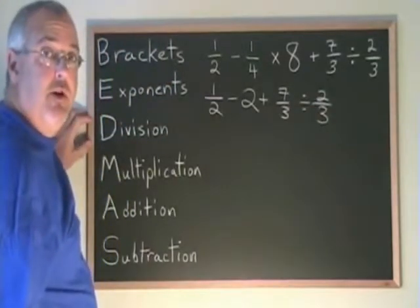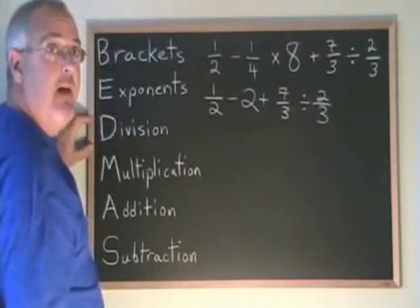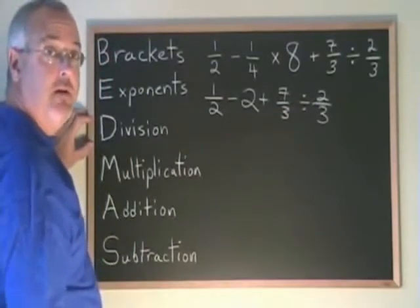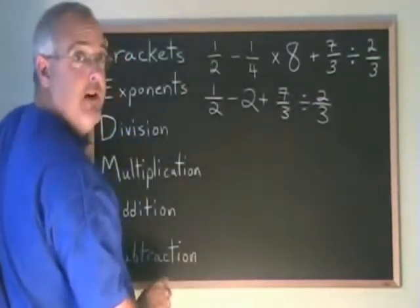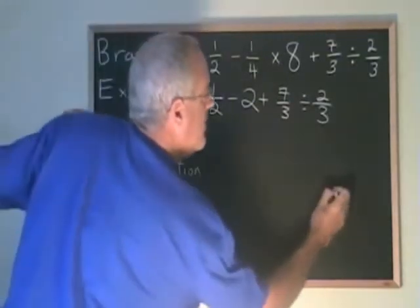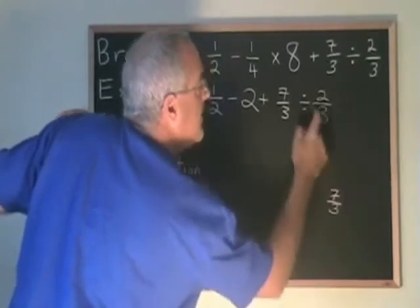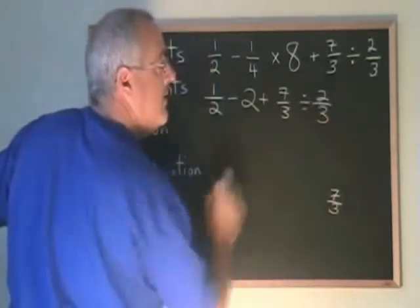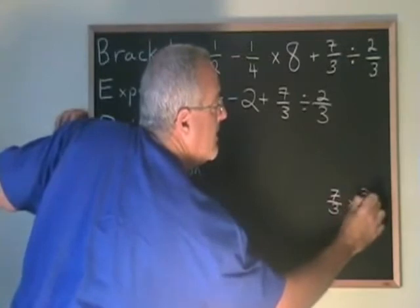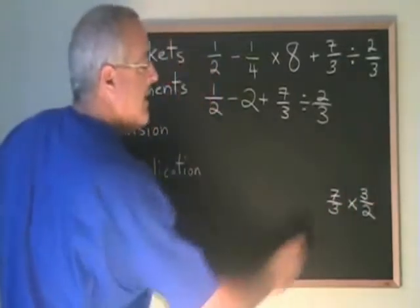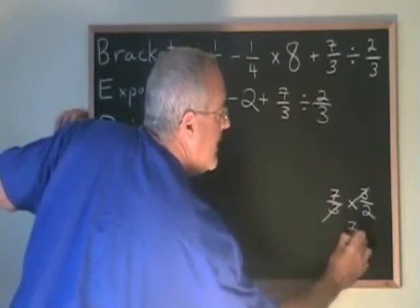The next operation that I have to do to respect BEDMAS is this division. And of course, to do a division of fractions, we turn the second fraction upside down and we multiply instead — so I'll do that over here. We have 7 thirds divided by 2 thirds; we change that to times 3 halves. And then if I cancel, I end up with an answer of 7 halves.